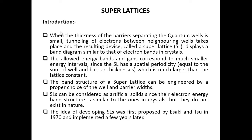As we discussed in the last class, when the thickness of the barrier separating the quantum wells is small, tunneling of electrons between the neighboring wells takes place and that results in a device called the super lattice. Super lattice are really the multiple quantum wells. And this super lattice displays a band diagram similar to that of electron bands in crystal. So super lattice also displays a band structure — a band diagram with a similar set of electron bands as in crystal.